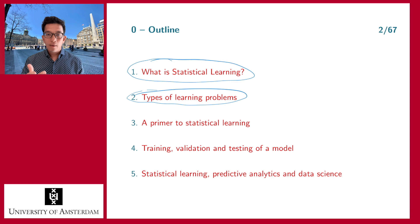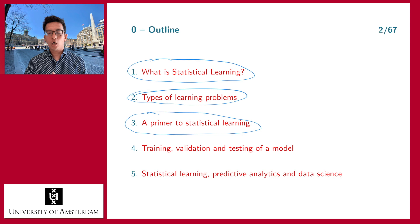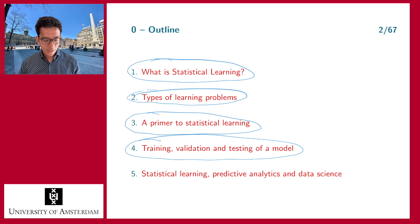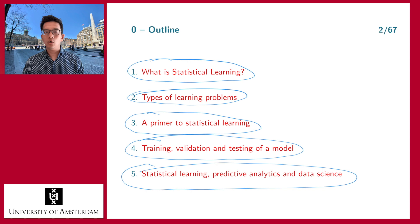Then we will move to the more mathematical part where we will give the basic foundation of statistical learning — what is the problem and what is the mathematical solution? How can different algorithms help you solve that problem from a data perspective? Then we will focus on how to test a model. Finally, in section five, I will make a link between what is data science and how it relates to predictive analytics and statistical learning.